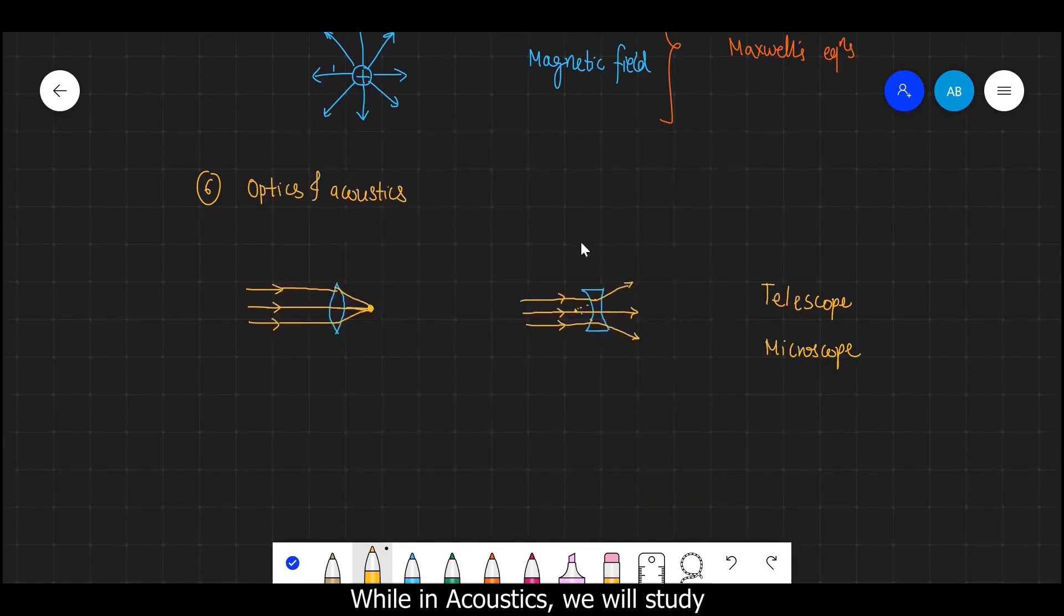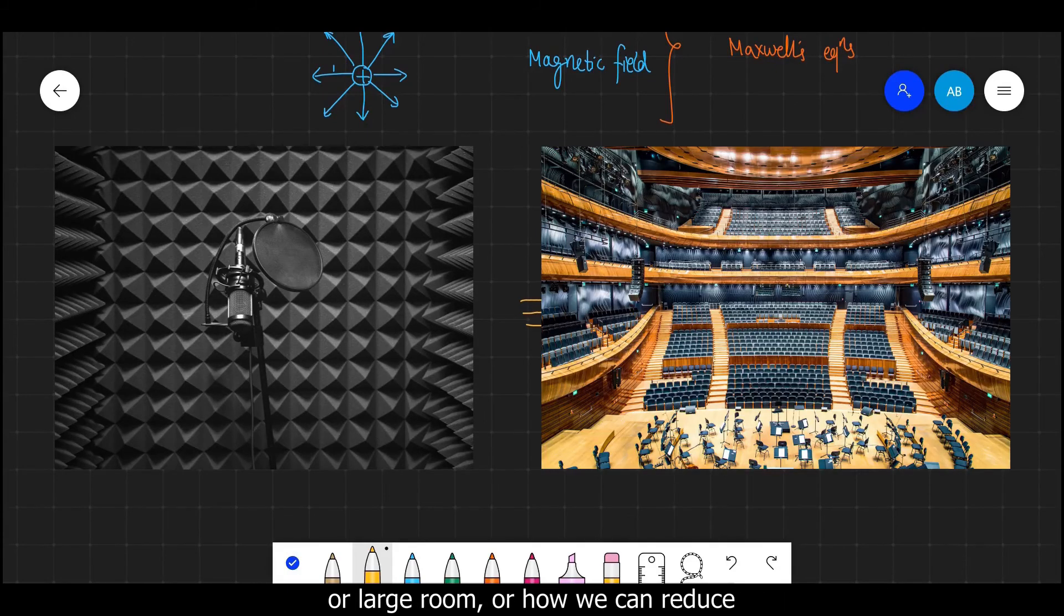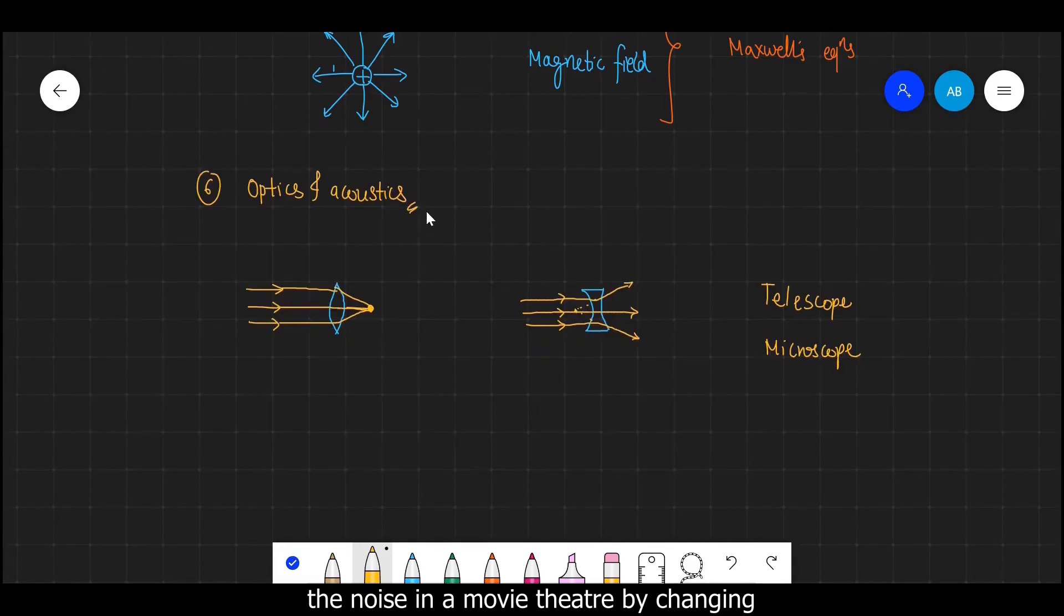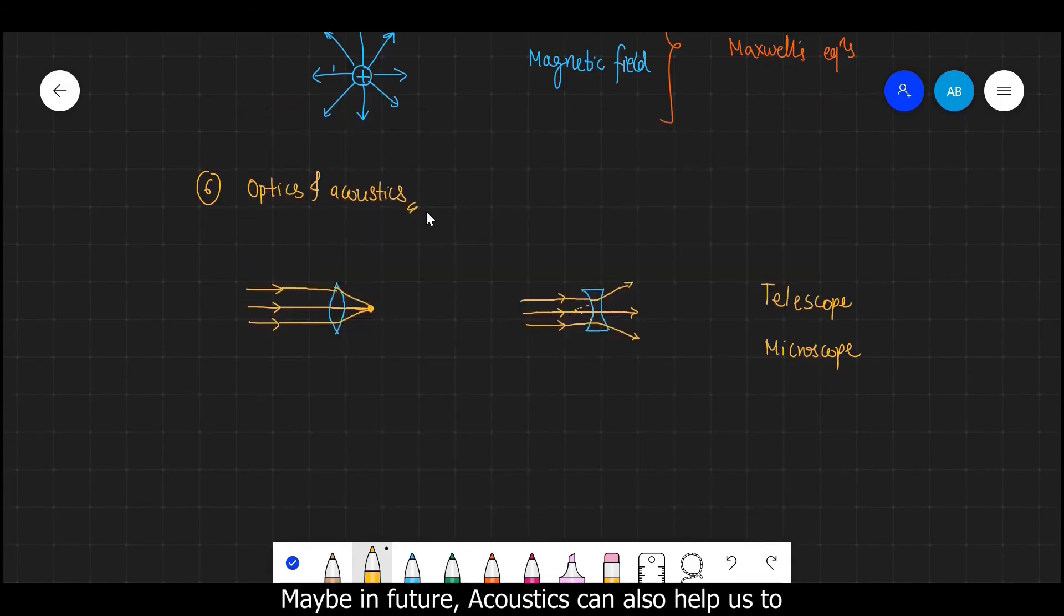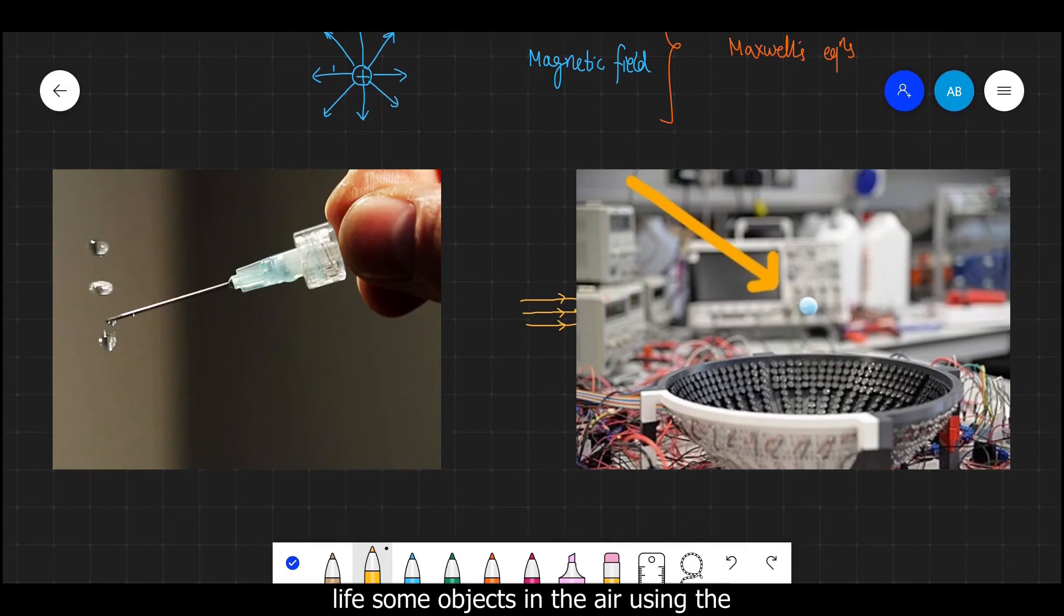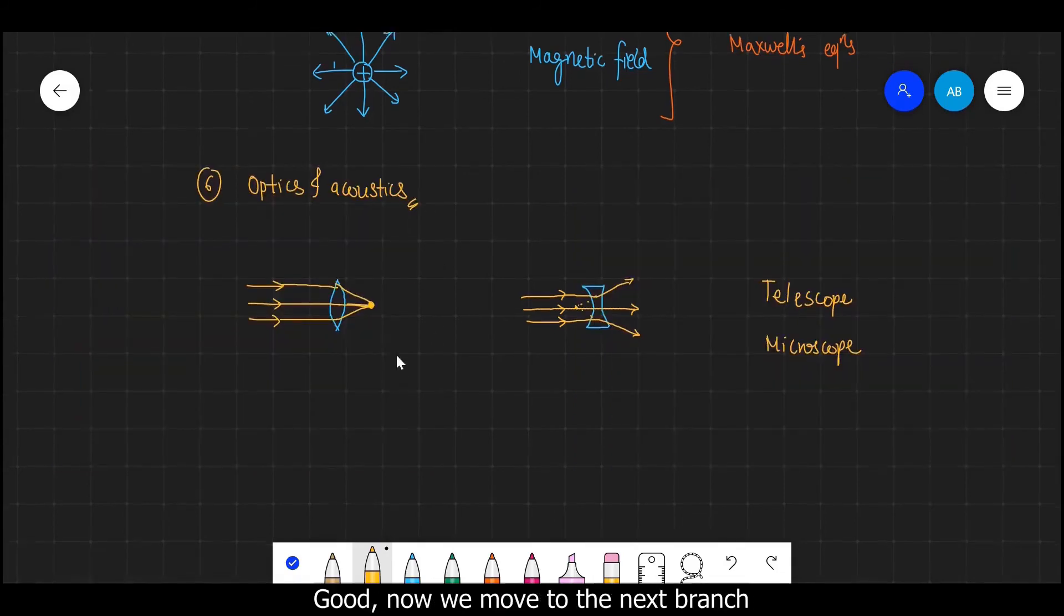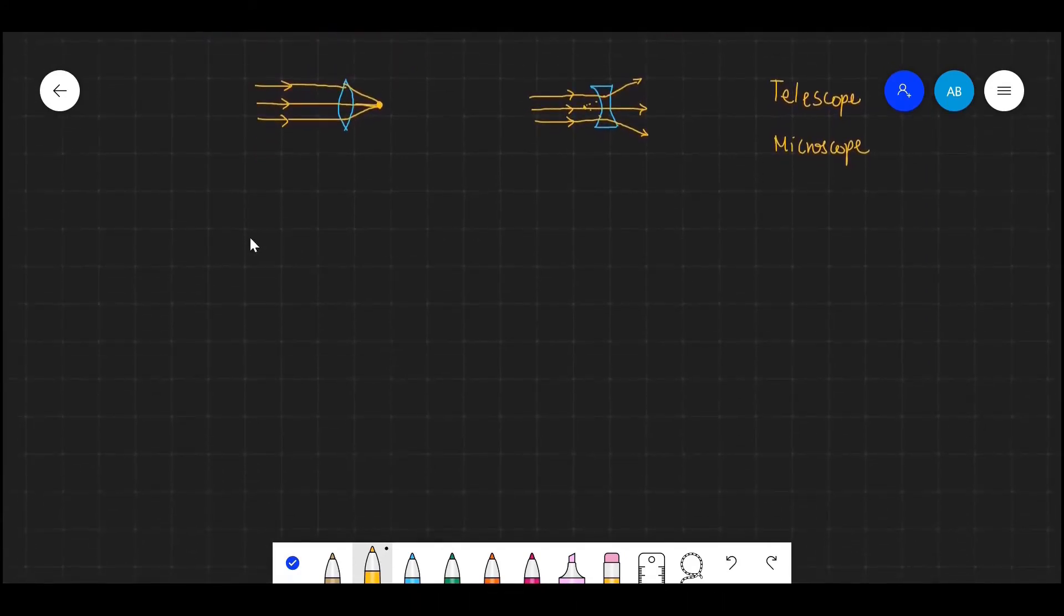So in this way we can take help from optics to study behavior of light. While in acoustics we will study the behavior of sound, say in a small room or large room, or how we can reduce the noise in a movie theater by changing the shape of the walls or by adding some material on the wall. And maybe in future acoustics can also help us to lift some objects in the air using sound waves.